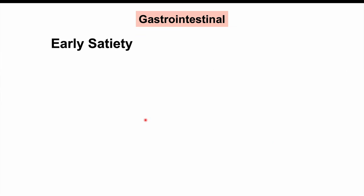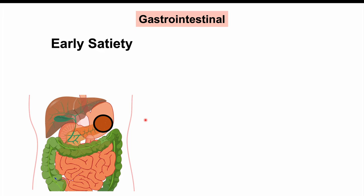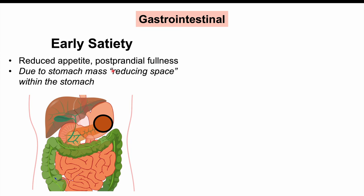Another gastrointestinal symptom is early satiety, which goes along with the weight loss. Early satiety leads to a reduced appetite and postprandial fullness — after eating, the patient feels very full after only small amounts of food. This is due to the stomach mass reducing the space within the stomach, so there is little room for food before the patient feels full, contributing further to weight loss.